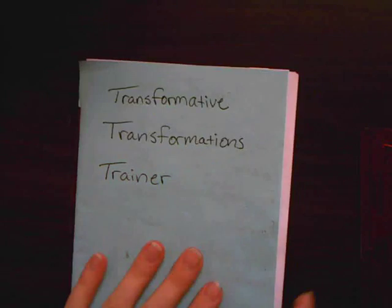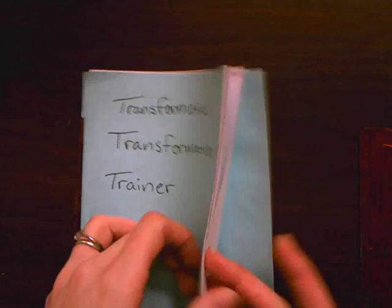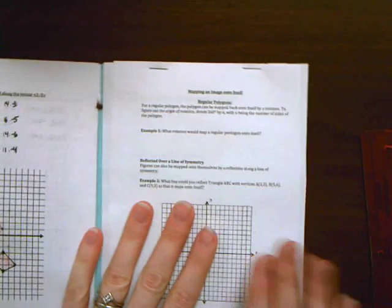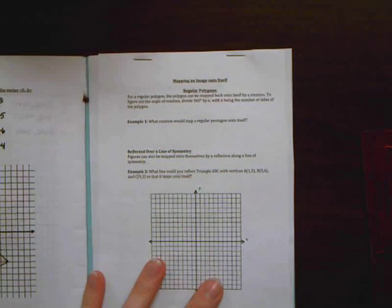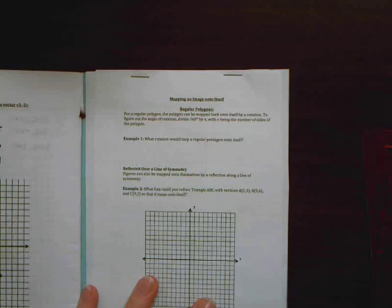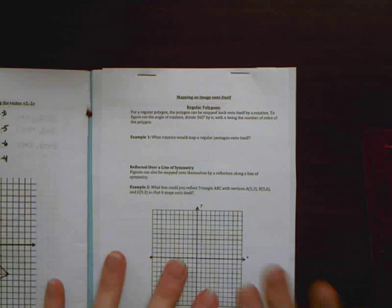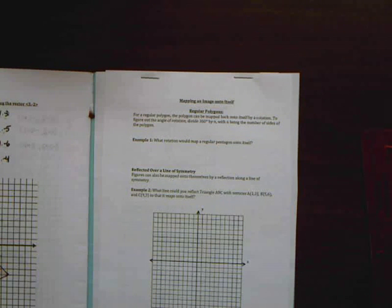Okay, so let's go ahead and turn in your booklet to the last page, which is your back cover, so that we can work on these addendum pages. So today we're going to be talking about mapping an image onto itself.